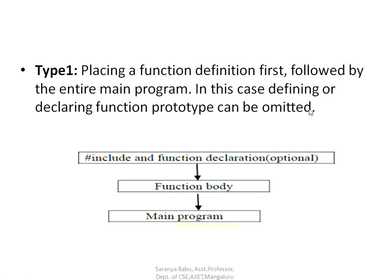In this case, function declaration — that is, the function prototype — is optional. The header file is mandatory, but function declaration is optional because immediately after the header file, before the main program itself, you are giving the function body, which is the function definition. So it is not mandatory to give the declaration here, unlike the normal approach where you have: header file, function declaration, main function, then function definition.